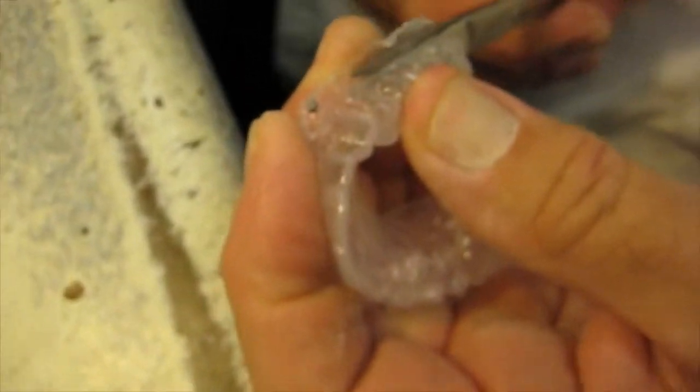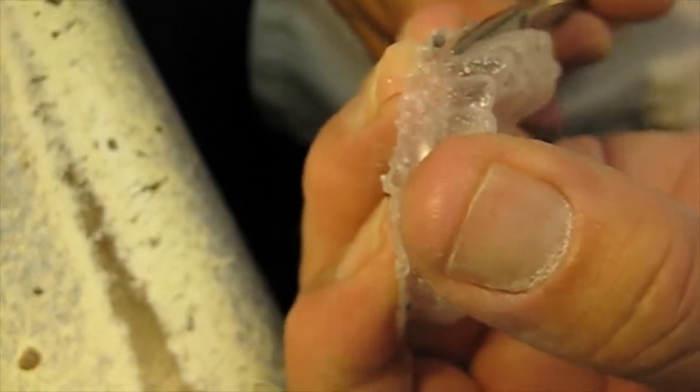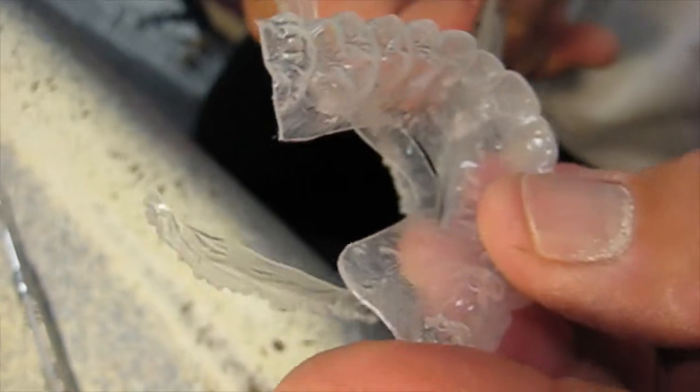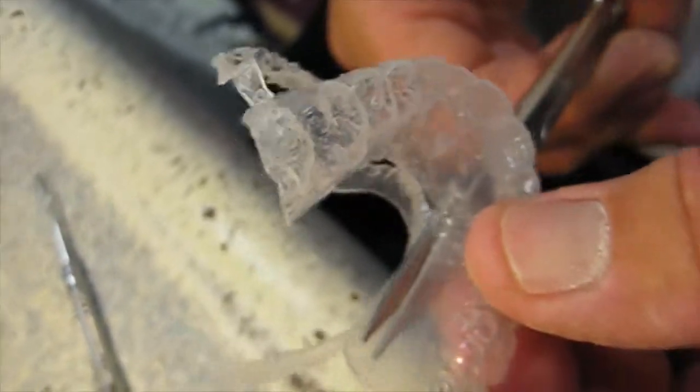Once this is done, we can clean it out, trim off the rough edges, and then use sandpaper to actually smooth it down so that it doesn't cut up your lips.